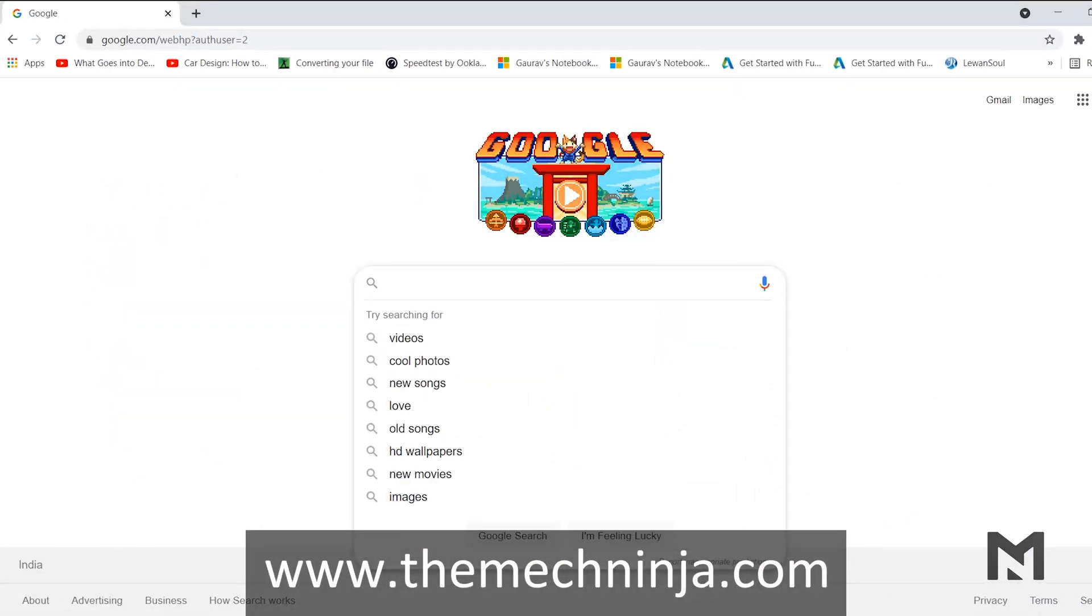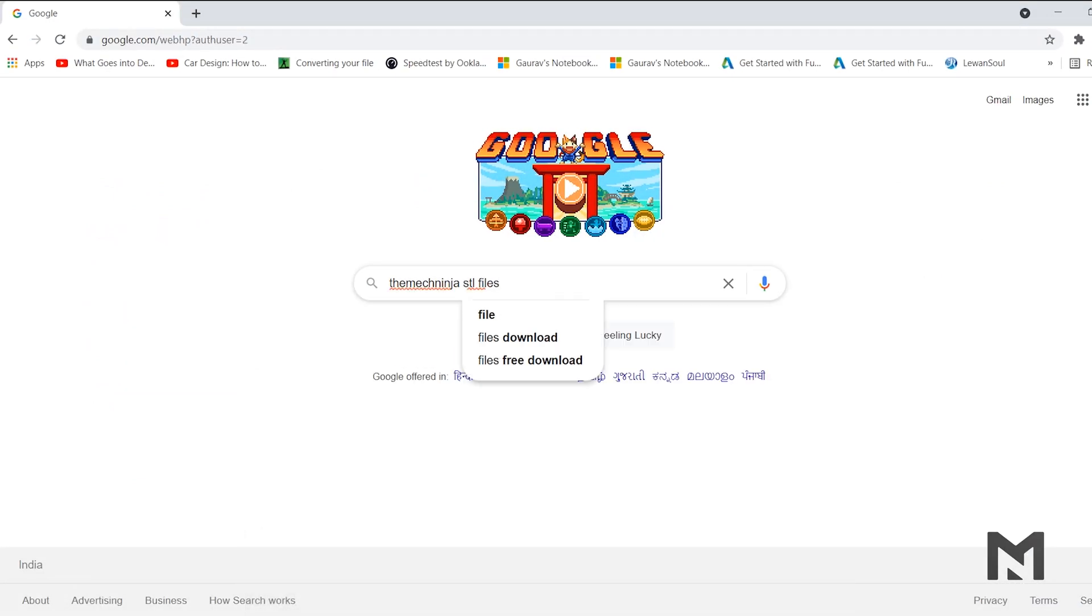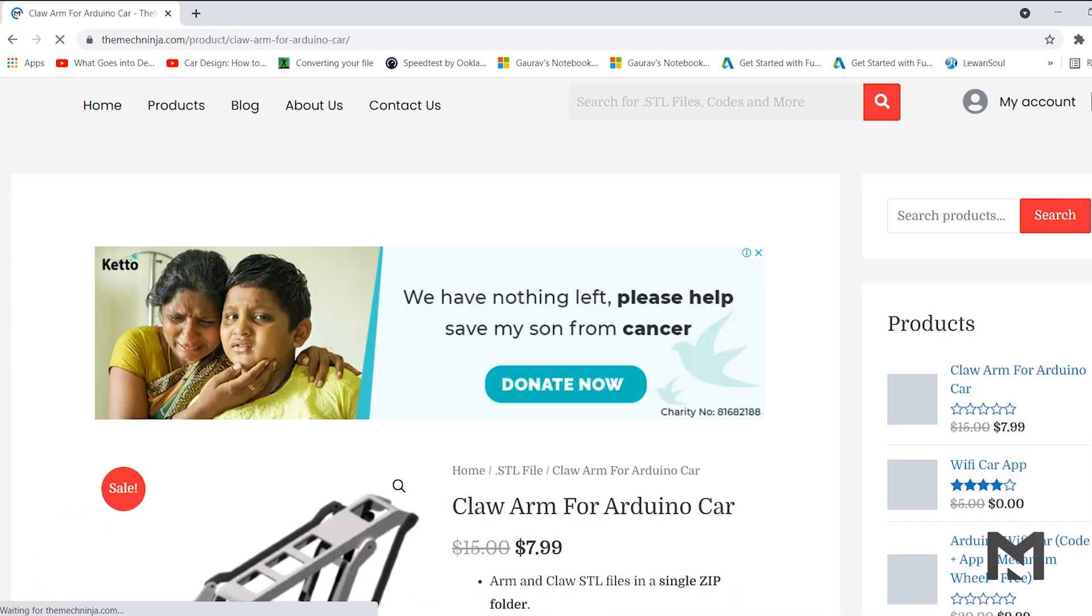You can download the files from the website themacninja.com or by simply googling the MacNinja HDL files and then click on the product page.